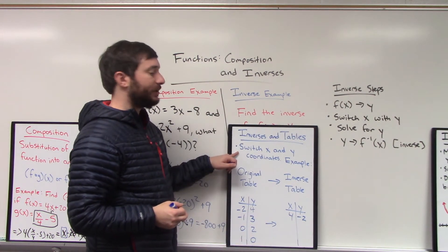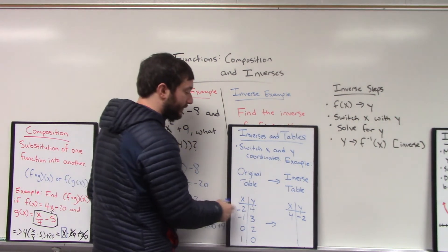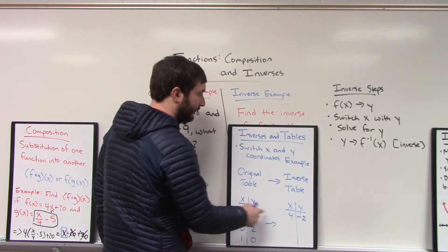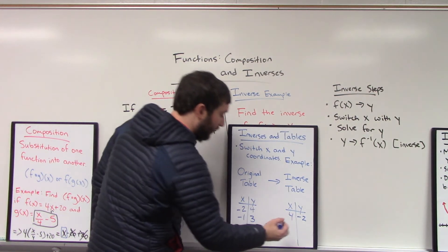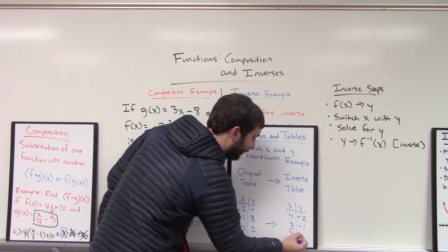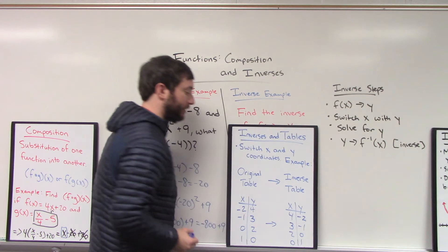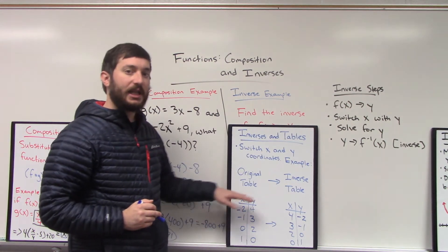So imagine that I had a function and that function, I plugged a number in and got a number back several different times. What the inverse function will look like when you look at its table, the x and y values will switch. This input instead will be the output. This output will instead be the input. For the inverse, that's what you have to think about. X and y's switch or swap. They don't change signs. Notice that negative 2 stayed negative 2. Positive 4 stayed positive 4. But all of the coordinates for the graph, for your tables, your inputs and outputs switch. So that is how you'd find the inverse of a table.